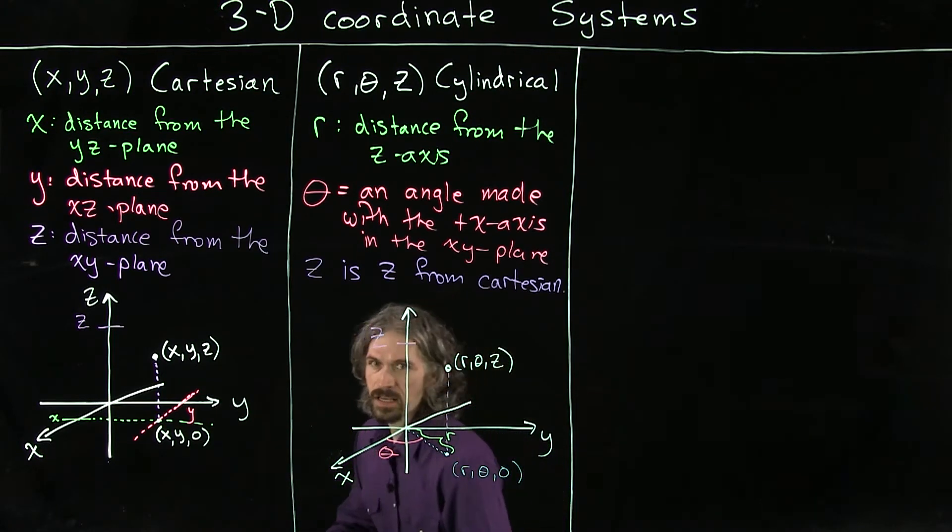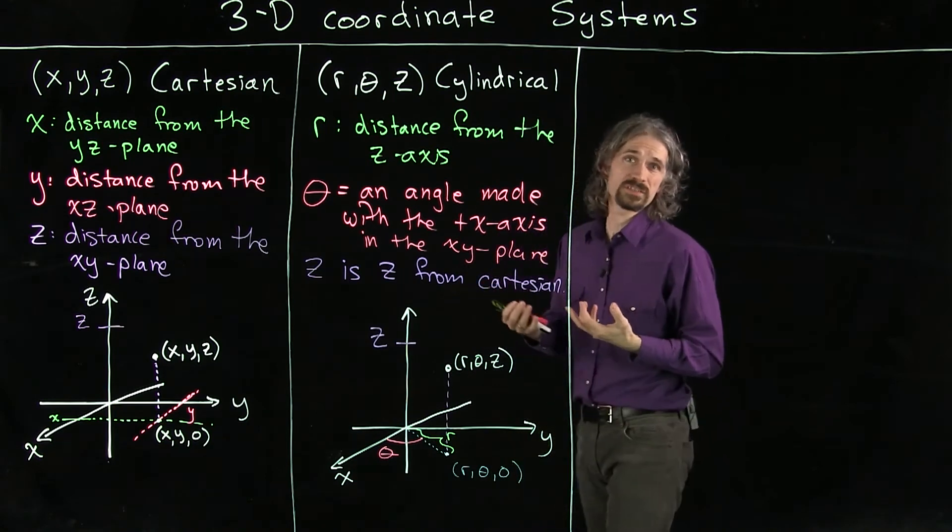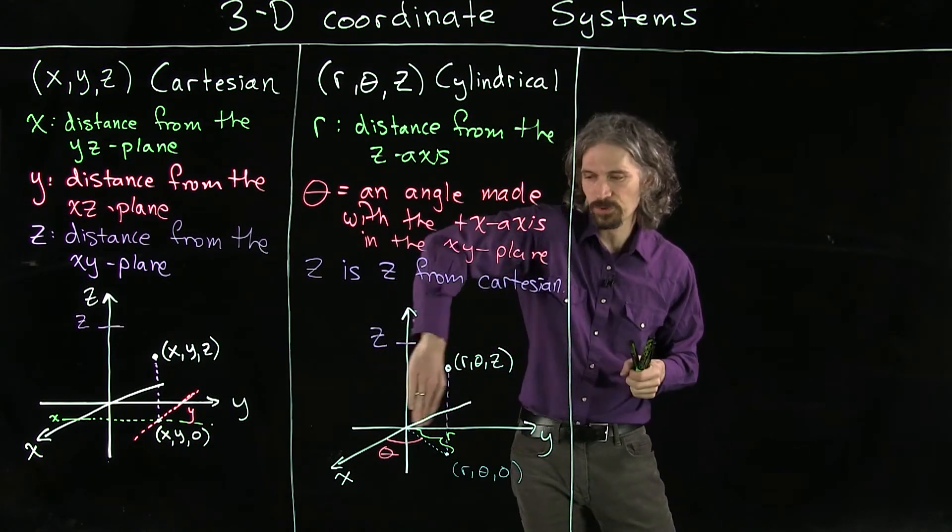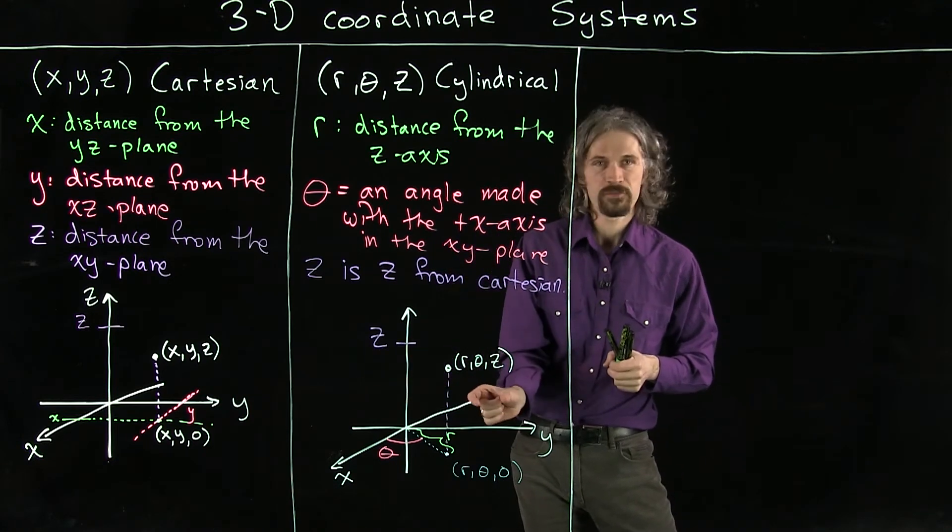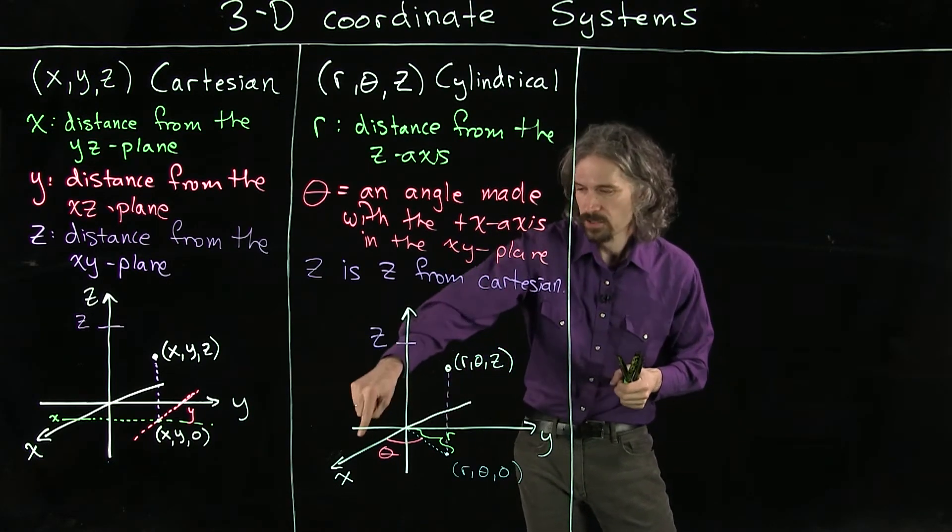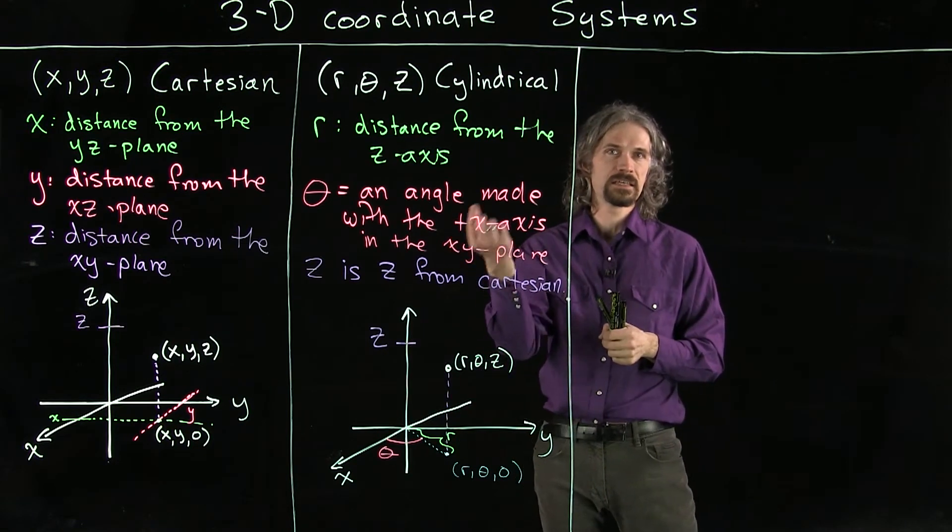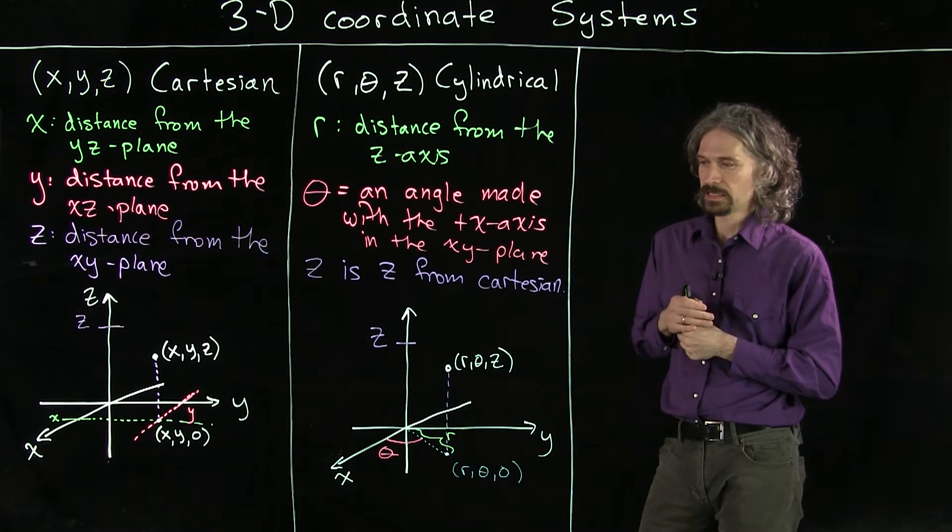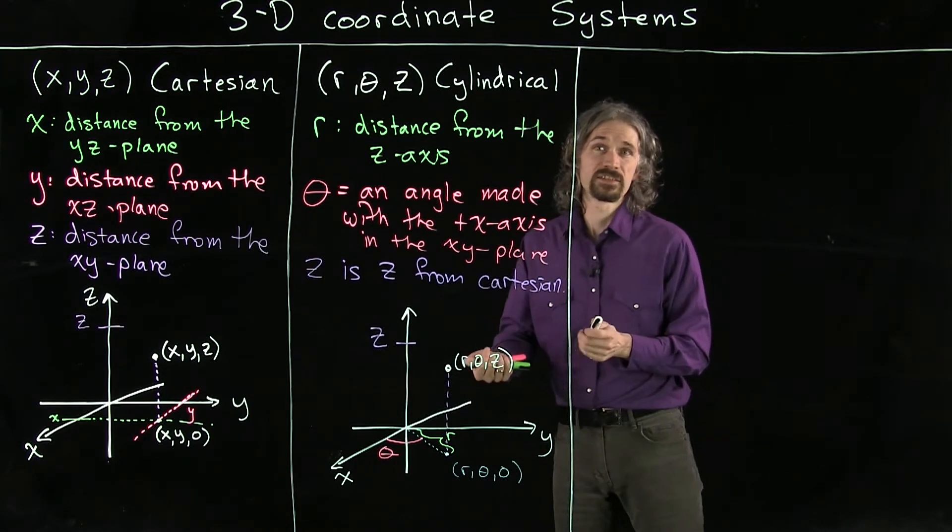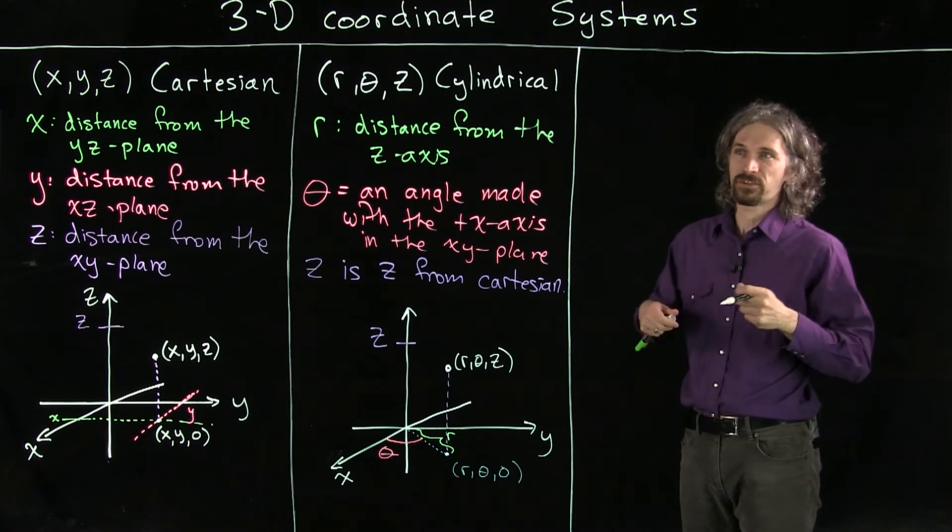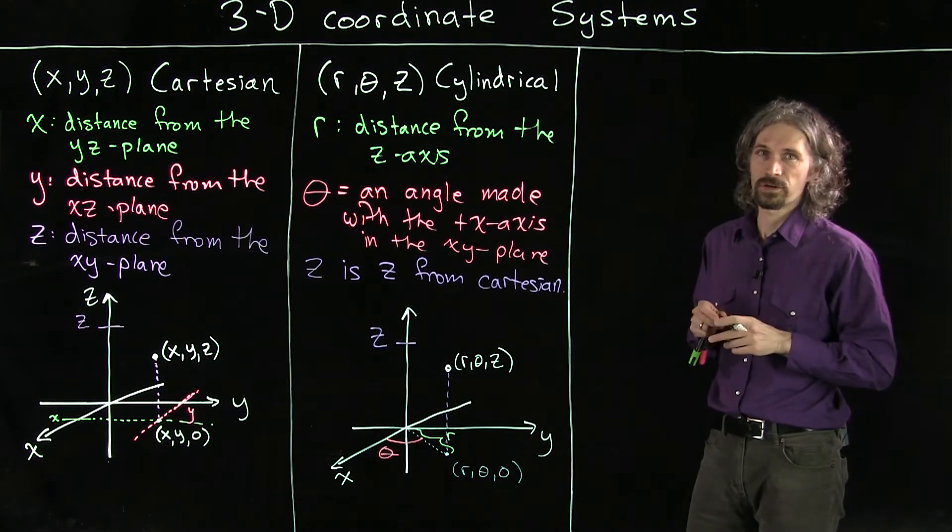And so that's how we can get to locations in cylindrical coordinates. We could do this in any order again. We could think about what is our height first, then think about rotating over with theta and moving away from the z-axis with r, or we could move away from the z-axis with r first, then rotate with theta, then move up by z. So we can do these moves in any order that we'd like.